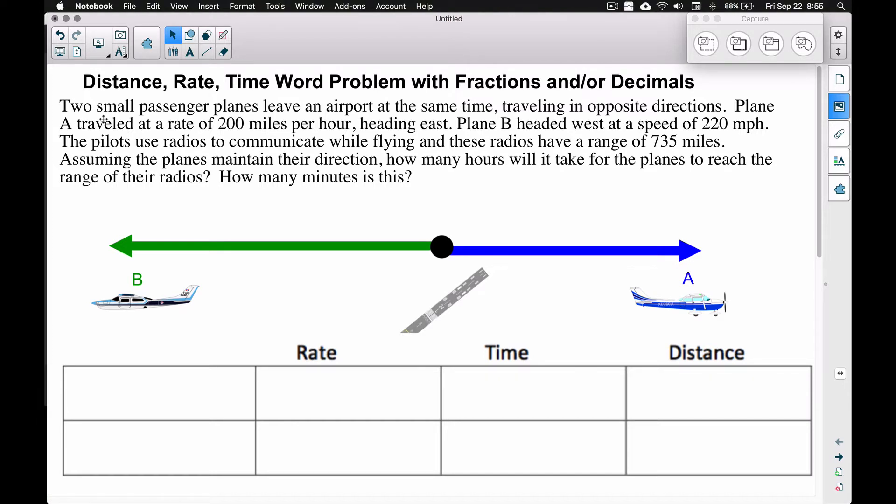The problem: Two small passenger planes leave an airport at the same time, traveling in opposite directions. Plane A traveled at a rate of 200 miles per hour heading east. Plane B headed west at a speed of 220 miles per hour. The pilots use radios to communicate while flying, and these radios have a range of 735 miles. Assuming the planes maintain their direction, how many hours will it take for the planes to reach the range of their radios, and then how many minutes is this?